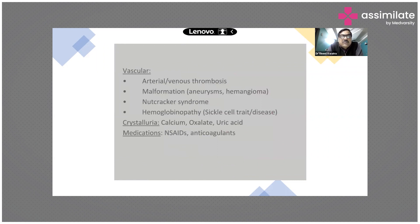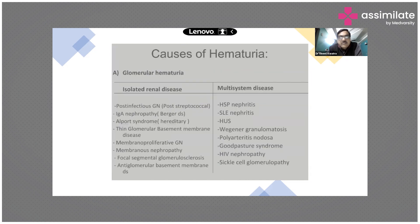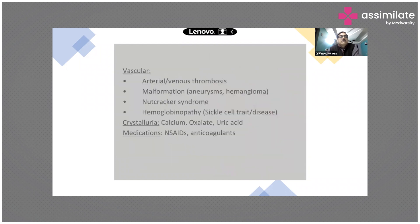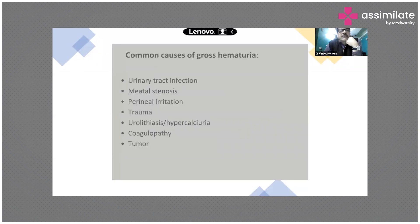Extra-glomerular causes of hematuria involve the nephrons and anatomical or congenital diseases. Upper urinary tract causes include tubular-interstitial diseases like pyelonephritis, acute tubular necrosis, and interstitial nephritis. Anatomical causes include hydronephrosis, polycystic kidney disease, tumors, and trauma. Vascular causes include arteriovenous malformations, renal vein thrombosis, and sickle cell trait. Hypercalciuria with calcium oxalate or uric acid crystals can also cause hematuria, as can medications such as NSAIDs and anticoagulant therapies.